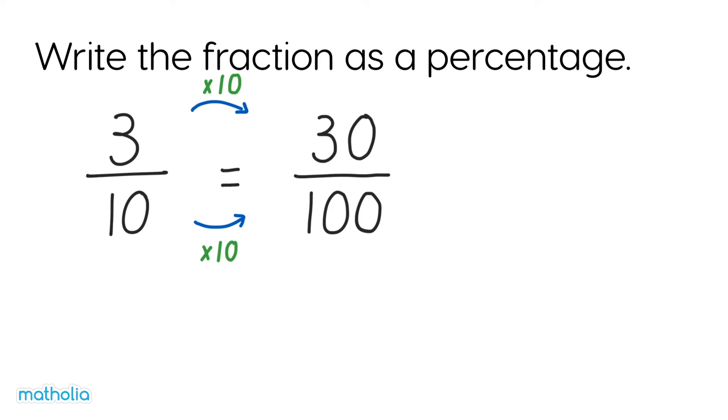3 tenths is equal to 30 one hundredths. The fraction has a denominator of 100, so the percentage is given by the numerator. 30 one hundredths equals 30%, so 3 tenths equals 30% too.